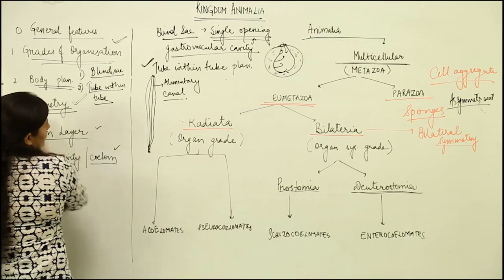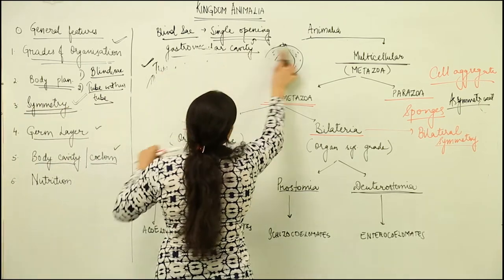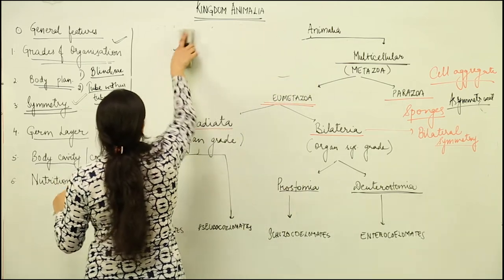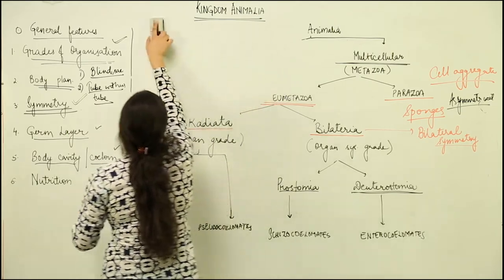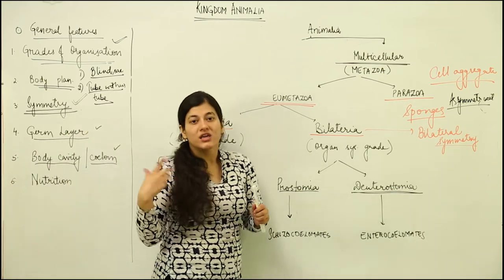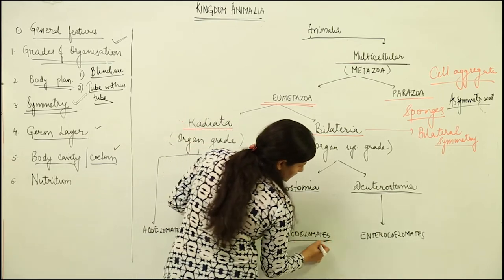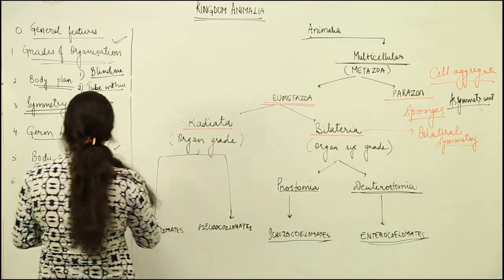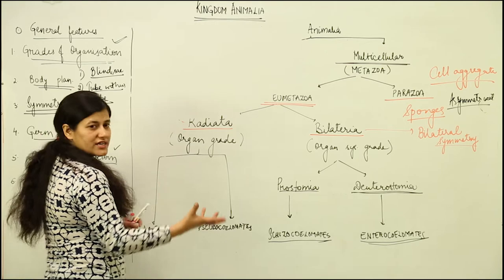When we talk about tube within tube plan, we have protostomes and deuterostomes. If the embryonic blastopore gives rise to the mouth first, then it would be protostomes. In the case of deuterostomes, the embryonic blastopore gives rise to the anus. In the protostomes, we have schizocoelom and enterocoelom. A new term has come into the scene: what is coelom, schizocoelom, enterocoelom?